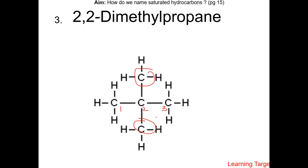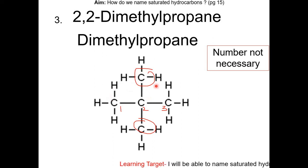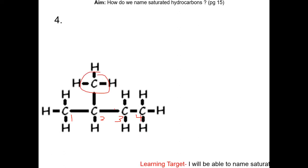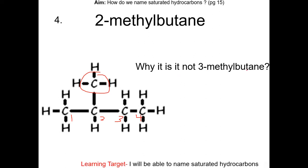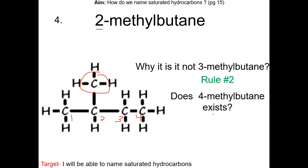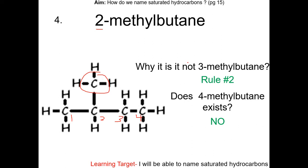The prefix di is needed because there are two methyl groups. You can also write this as dimethylpropane — numbers are not needed because the substituents can only be on carbon 2; they cannot be on the end carbons. For question 4, the parent chain is 4 carbons long. There is one substituent, which is a methyl group on carbon 2, so the name is 2-methylbutane. It is not 3-methylbutane because of rule 2 — you want the number as small as possible. 4-methylbutane does not exist because you cannot have a substituent at the end carbon. Therefore, 2-methylbutane can also be written as methylbutane.